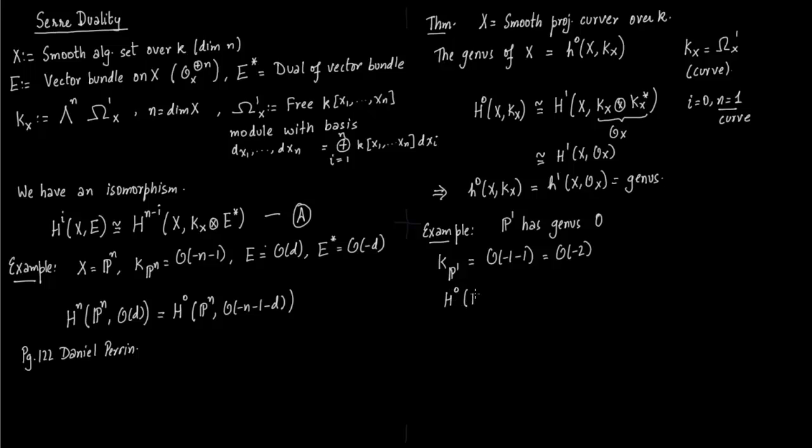And the global section corresponding to the sheaf O(-2) is 0, precisely because O(-2) consists of functions where the denominator has degree 2 more than the numerator. And there are no non-constant global sections. Because constants cannot have degree of numerator less than degree of denominator. And therefore the h0 of P1, O(-2) is 0. Genus is 0.